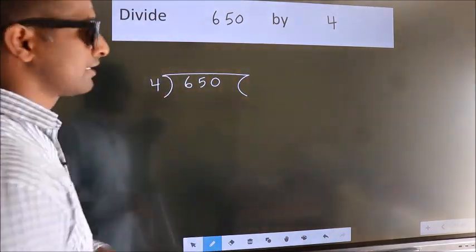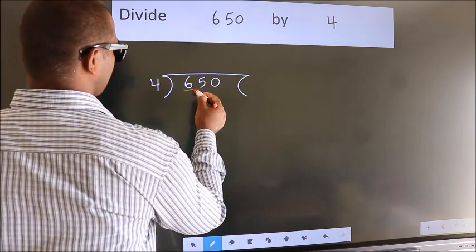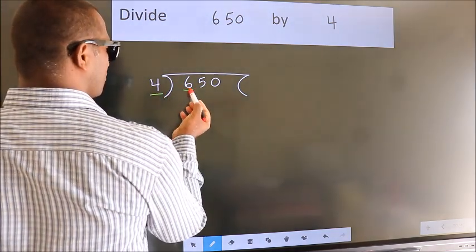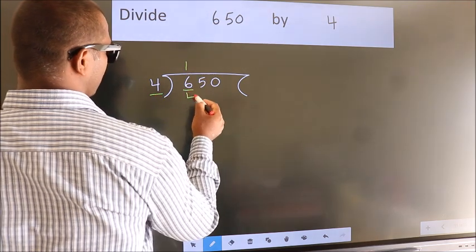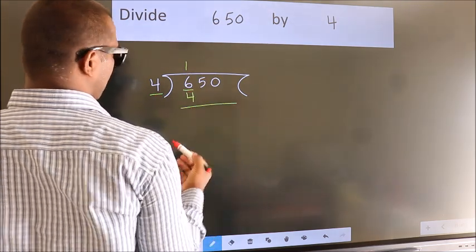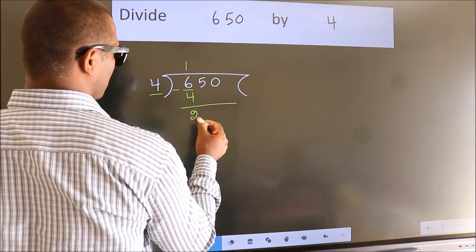Next, here we have 6, here 4. A number close to 6 in the 4 table is 4 once 4. Now we should subtract. We get 2.